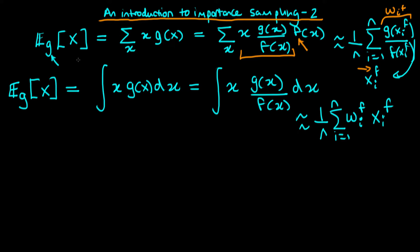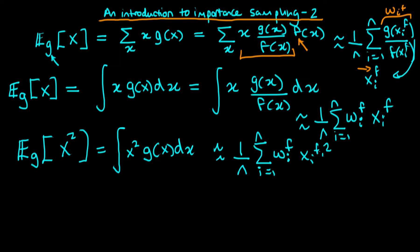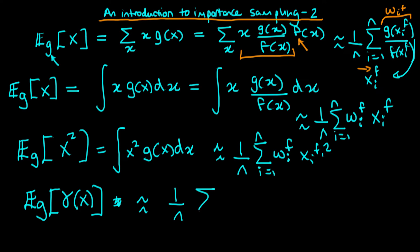This relationship holds not just for the expected value of x, but for any other function as well. For example, to work out the expected value of x squared, we integrate x squared times g(x) dx, and the approximation becomes 1 over n times the sum from i equals 1 to n of w_i^f times x_i^f times x_i^f — I'm not squaring the f, I just have two superscripts. More generally, if I have some function gamma of x and want its expectation, it's 1 over n times the sum of w_i^f times gamma of x_i^f.